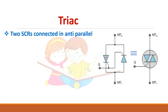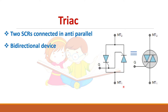These two SCRs are able to conduct in two directions, so this TRIAC becomes a bi-directional device. Since it is bi-directional there is no concept of anode and cathode. So it is represented as MT1, MT2, and gate terminals. This whole setup can be represented as a TRIAC unit.